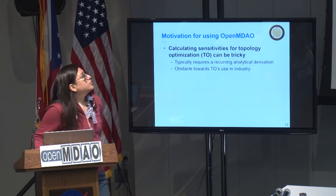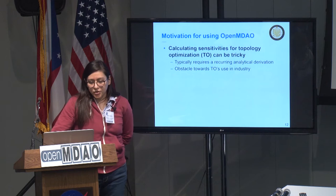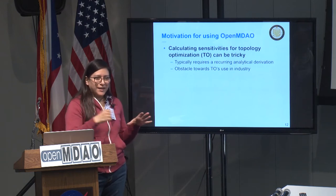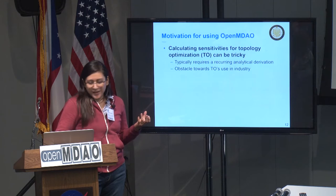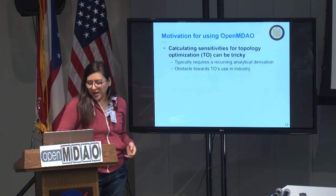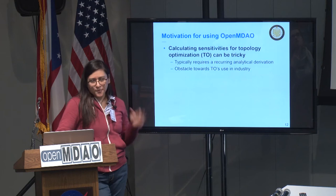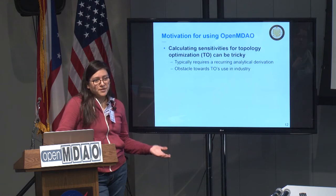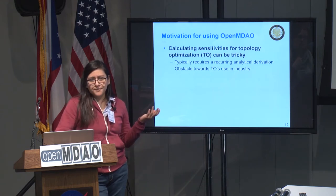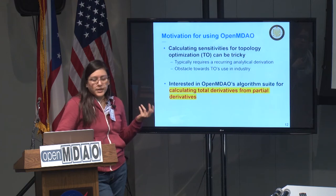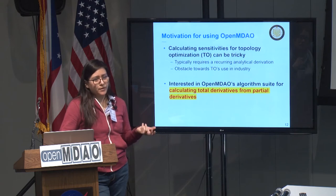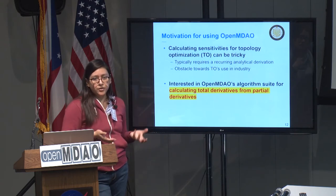So why do we want to use OpenMDAO? As was mentioned before, calculating sensitivities for topology optimization can be quite a process. There's usually some long-hand calculation that's always wrong at first, and then you have to figure out what's wrong with it. That can really be an obstacle for industry. So what we were really interested in was being able to use OpenMDAO's algorithms for calculating derivatives and seeing if we could use that in our framework.